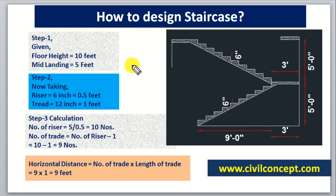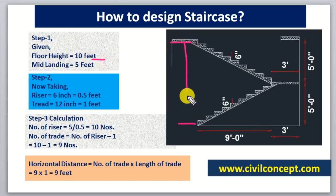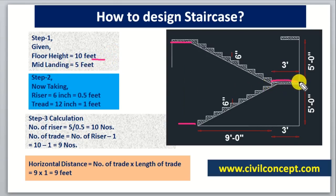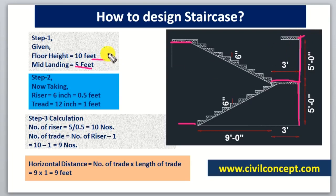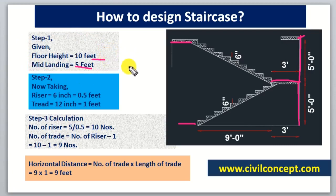Now let us move to the calculation — how to design a staircase step by step. In Step 1, we are given the floor height, meaning from ground level to the first floor. This height is given as 10 feet. We divide it by the mid landing, which gives us 5 feet for the first flight and 5 feet for the second flight.